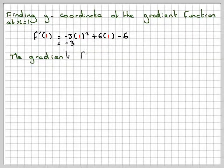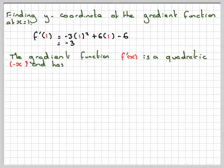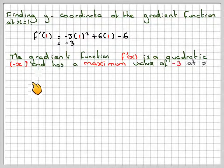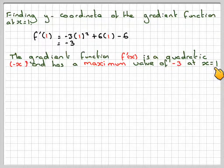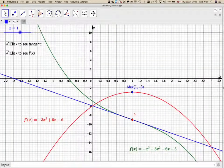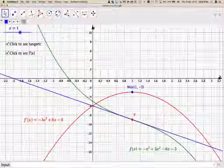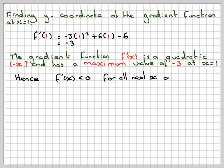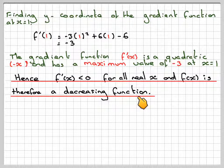So we now make a conclusion. The gradient function f'(x) is a quadratic with a negative leading coefficient — a sad face — with a maximum value of -3 at x = 1. Hence f'(x) will always be negative for all real x. The y-coordinate of this graph is always negative for any value of x, which means the gradient is always negative. Therefore f(x) is a decreasing function.